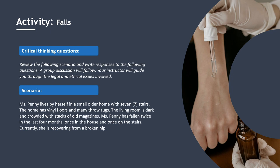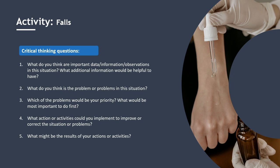Activity: Falls. Review the following scenario and write responses to the questions. A group discussion will follow and your instructor will guide you through the legal and ethical issues involved. Scenario: Miss Penny lives by herself in a small older home with seven stairs. The home has vinyl floors and many throw rugs. The living room is dark and crowded with stacks of old magazines. Miss Penny has fallen twice in the last four months — once in the house and once on the stairs. She is currently recovering from a broken hip. Critical thinking questions: What are the important data, information, and observations? What additional information would be helpful? What are the problems? Which is your priority? What would you do first? What actions could you implement? What might be the results of your actions?